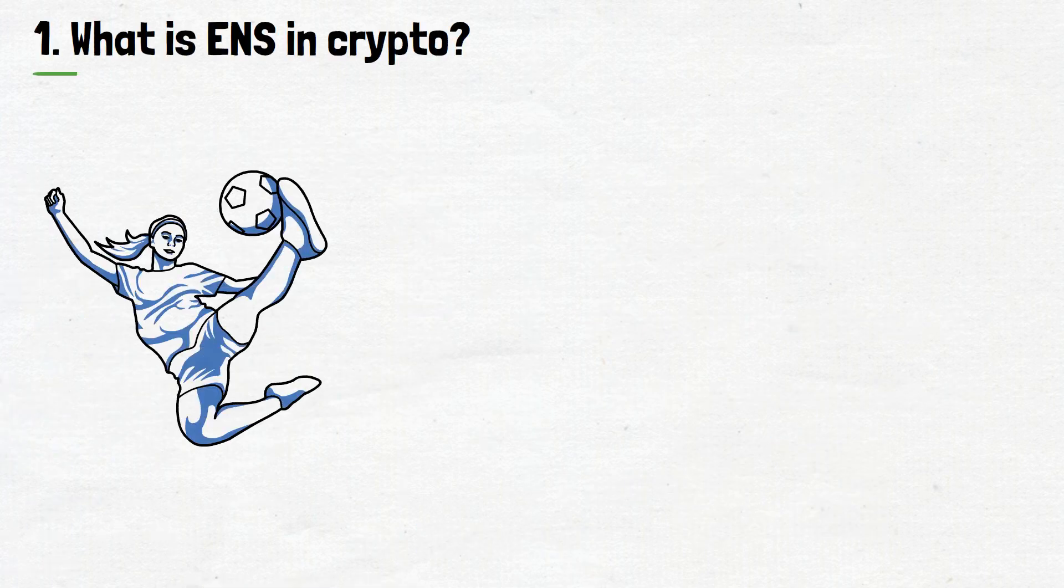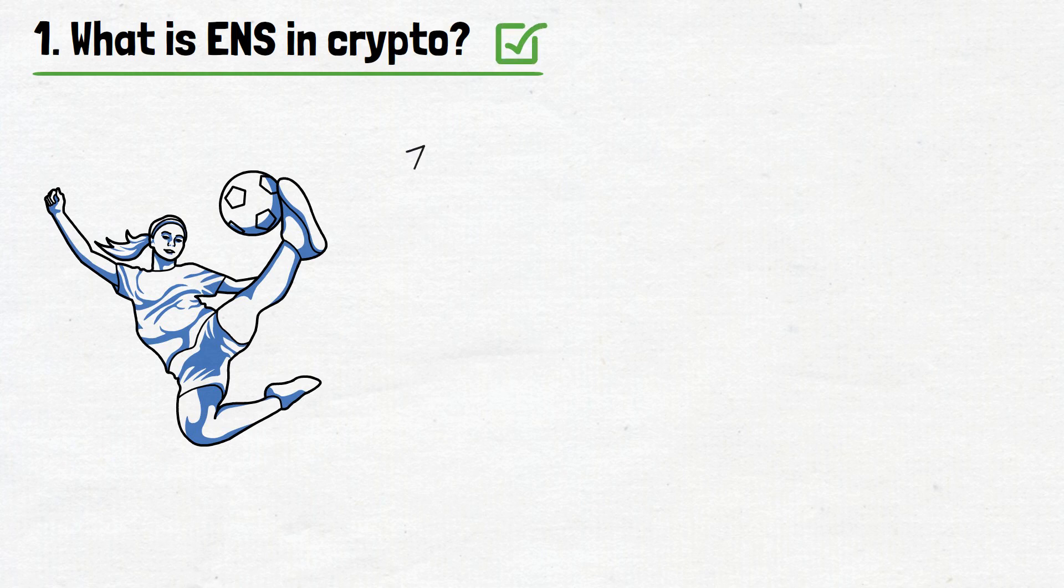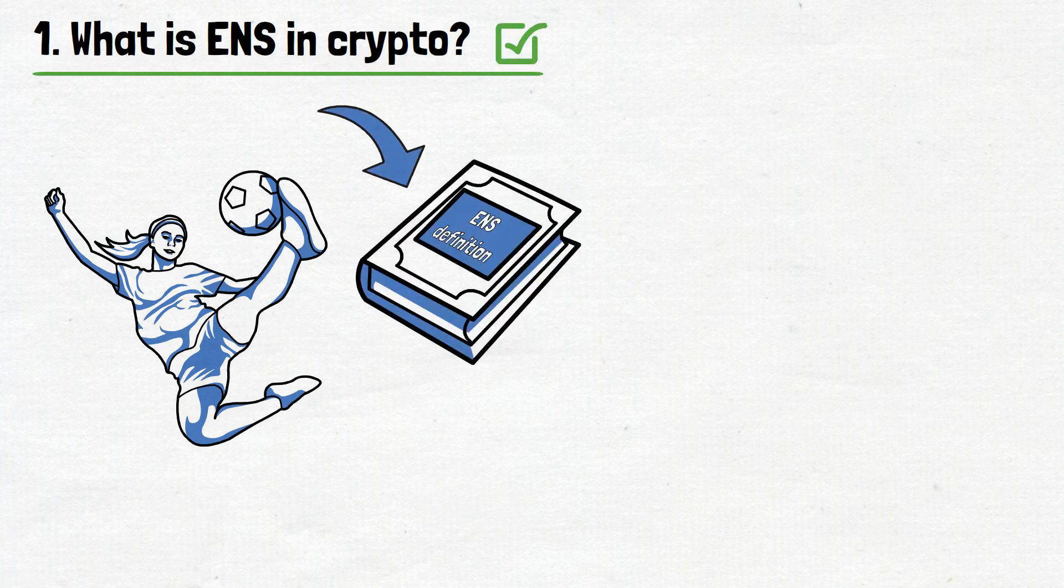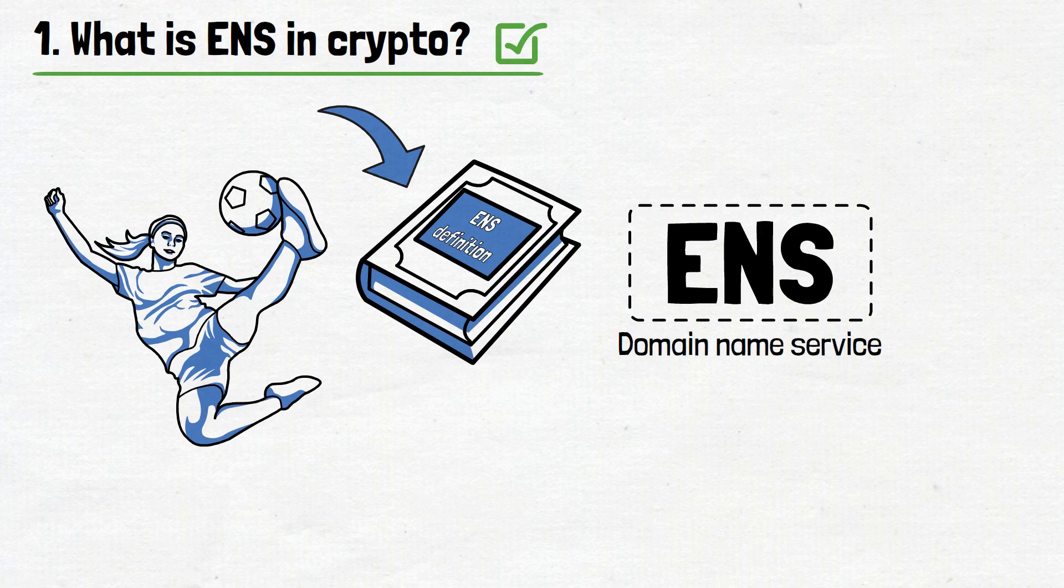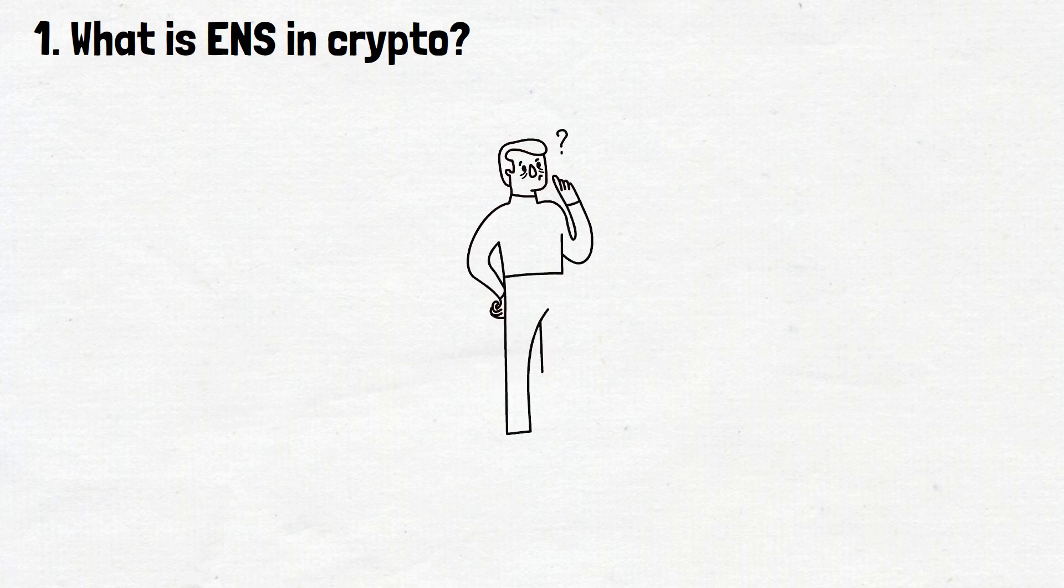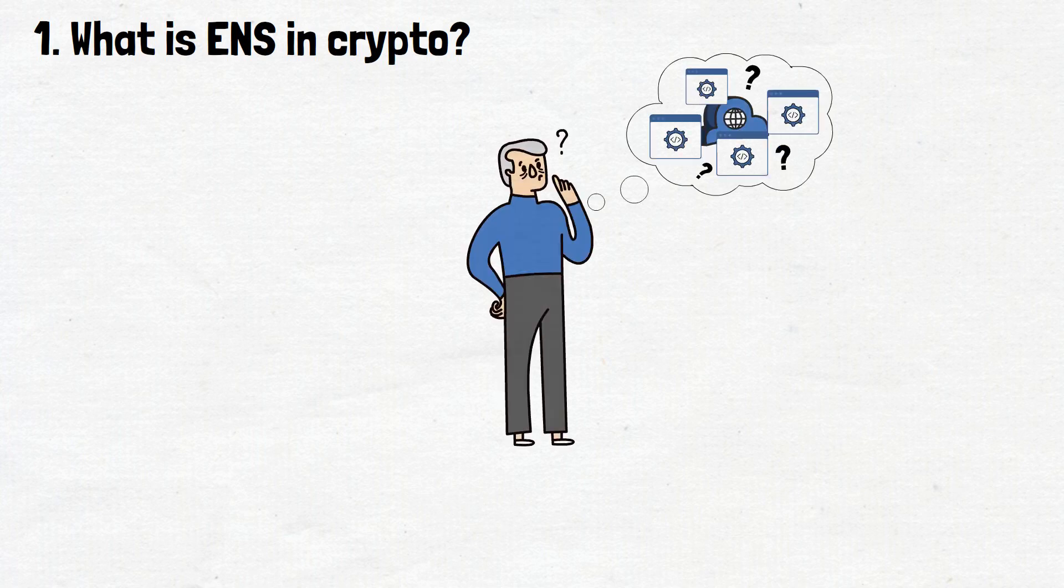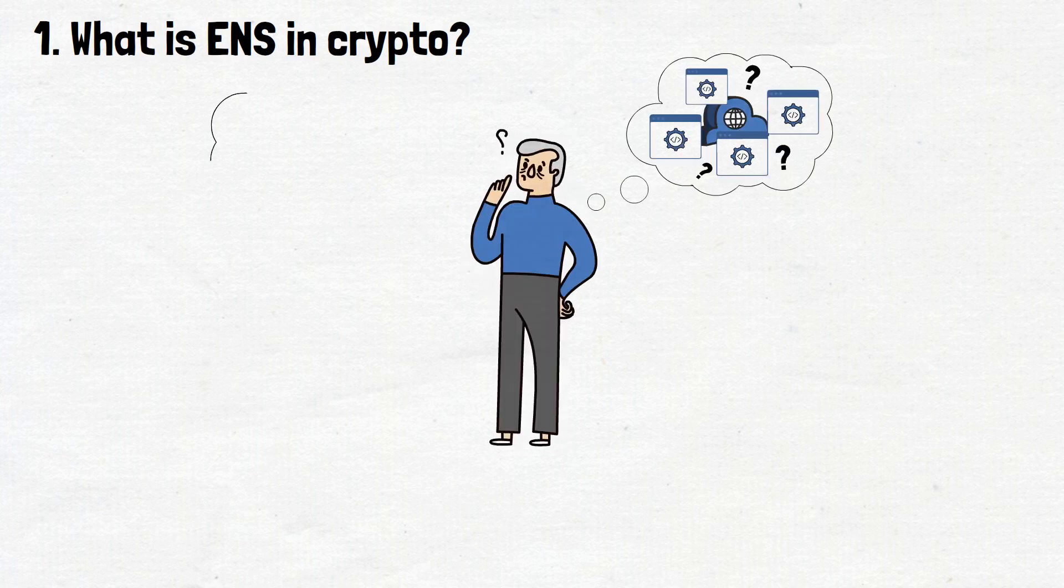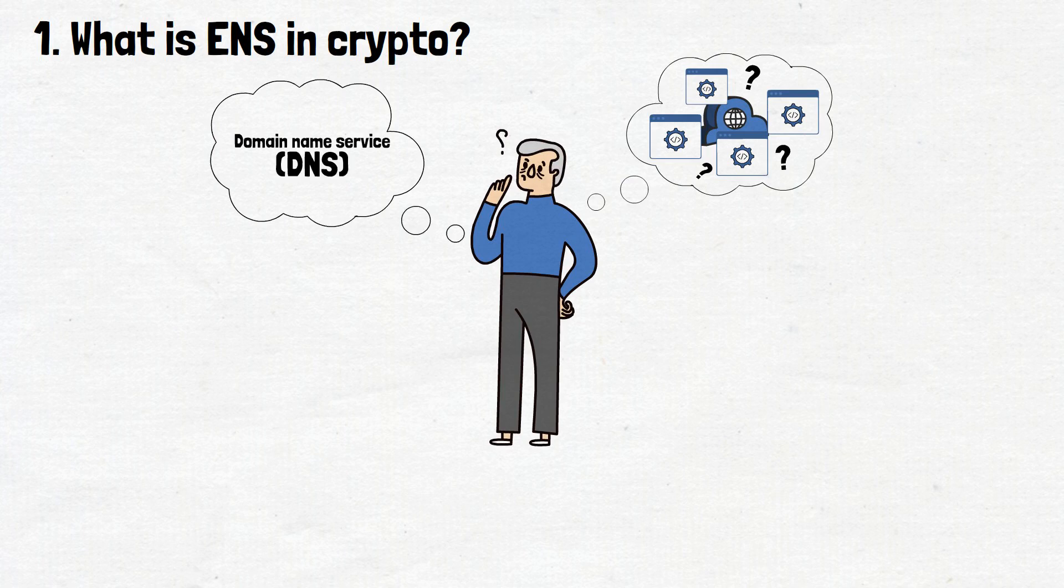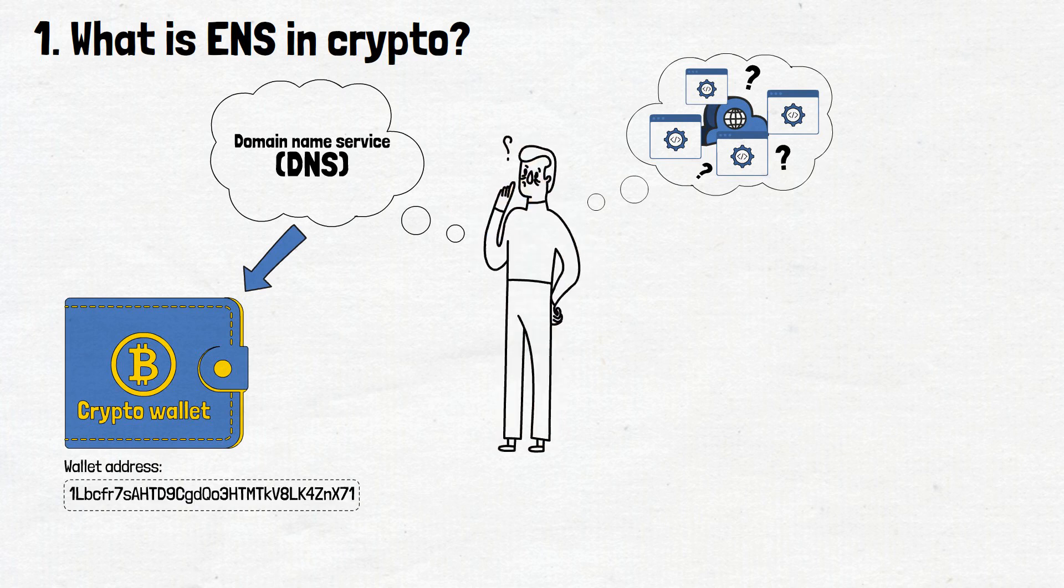To kick things off, the question of what is ENS in crypto could be easily answered when looking at the ENS definition. In simple terms, Ethereum name service is a domain name service launched on, as the name suggests, the Ethereum blockchain. If you don't know much about website creation or the overall mechanics behind the internet, you might wonder what is a domain name service, or a DNS. Well, in a nutshell...